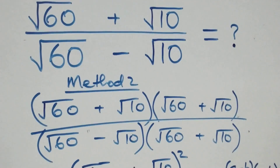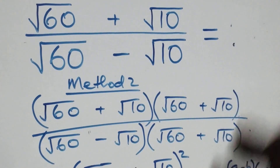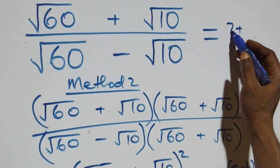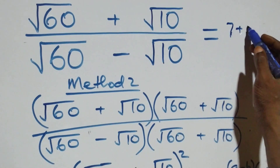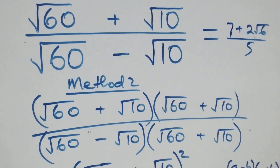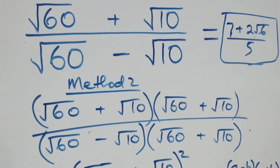We can conclude that the simplified form of this given problem is 7 plus 2 root 6, over 5. Thank you for watching us here at Master Team. Don't forget to subscribe for more videos, turn the notification bell on, share this video with a thumbs up, and put your comments. See you next class, bye for now.